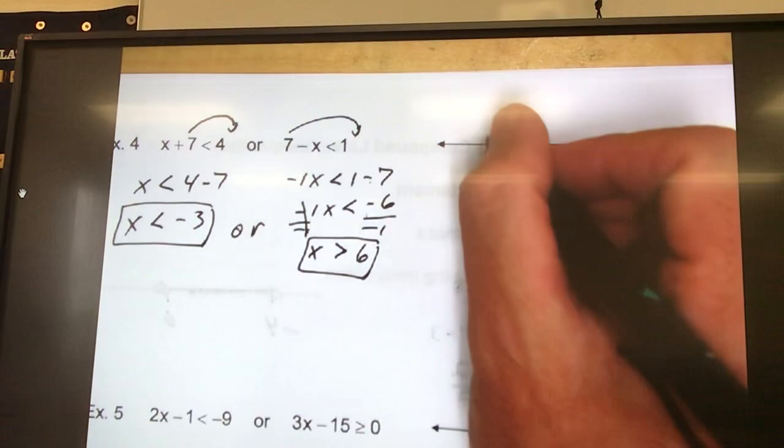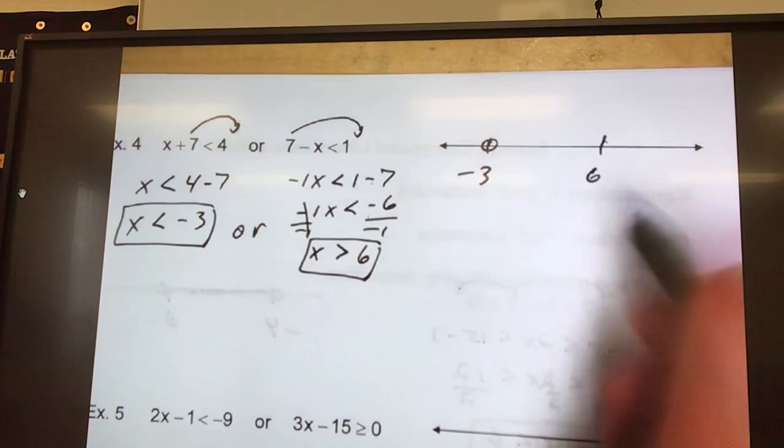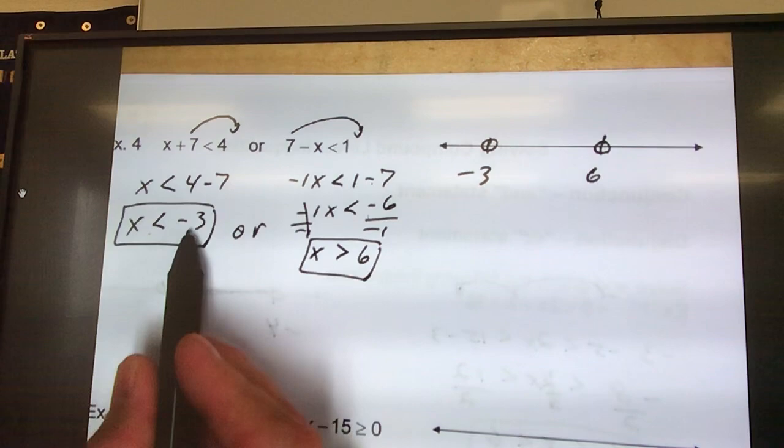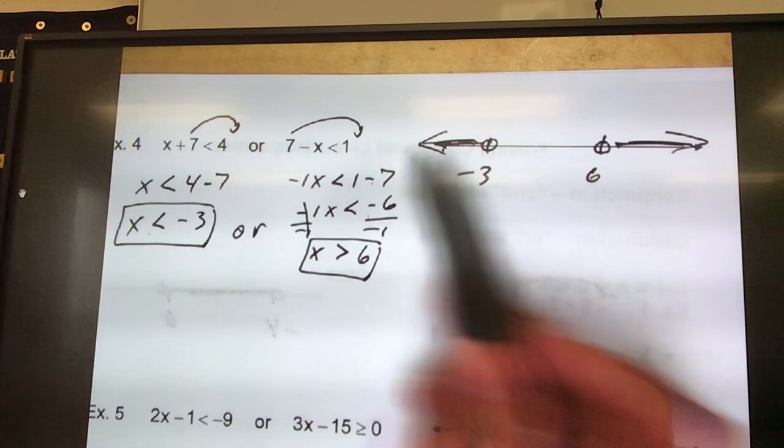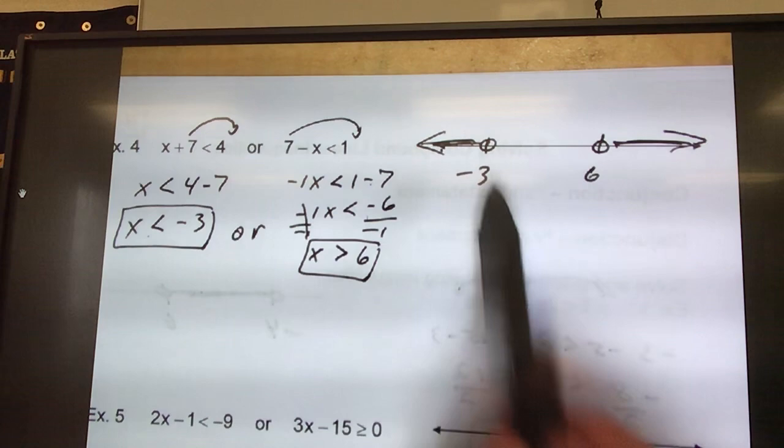Numerically, negative 3 goes first, and then 6. It is not equal to, so it's an open circle. Not equal to for the 6, so it's an open circle. x is less than negative 3, so that shades to the left. x is greater than 6. Shades to the right. So, there's your chips or drink. So, any answer outside here would be correct. Or outside here would be correct. Negative 3 and positive 6 are not correct because they are not inclusive.